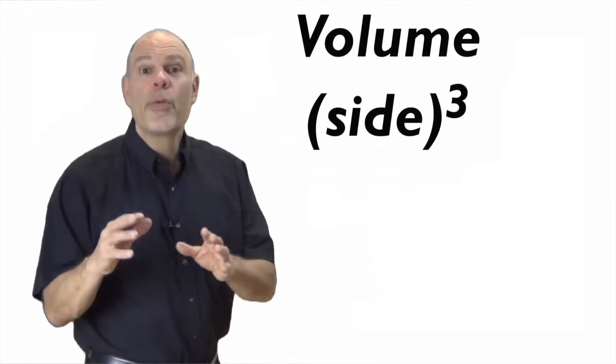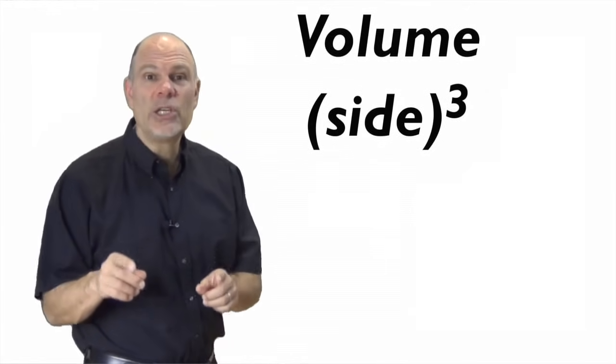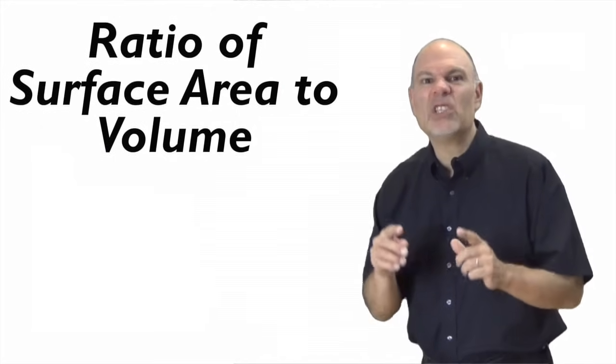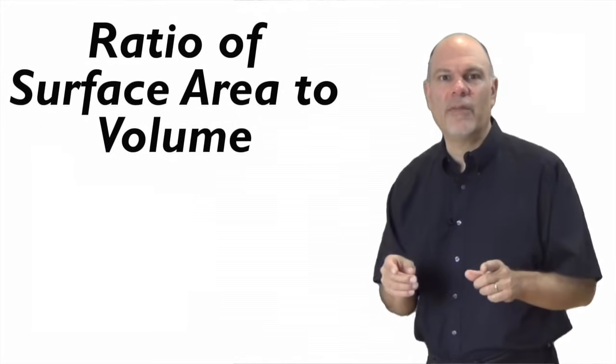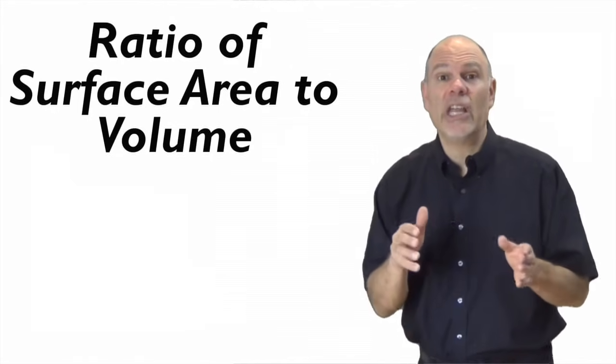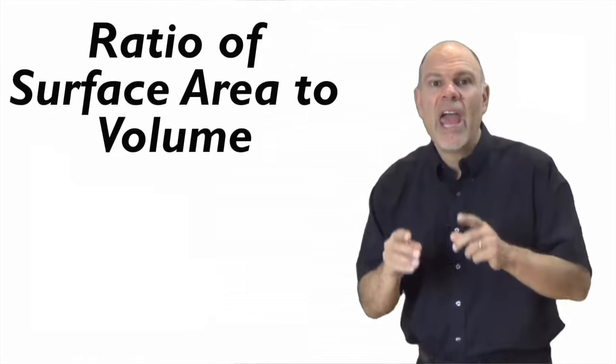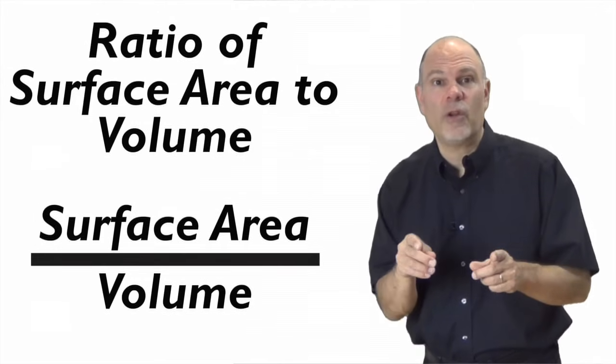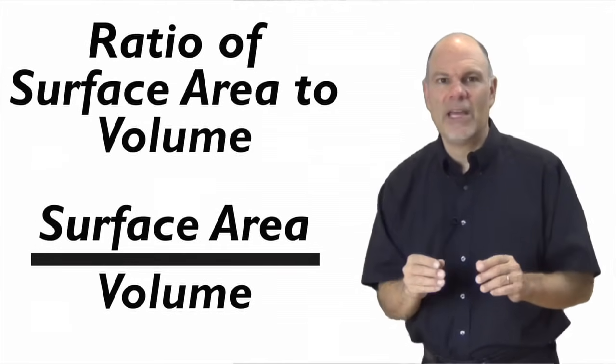The vinegar is diffusing through the outer surface and into the cube's volume. The smallest cube has the smallest volume at 0.001 centimeters cubed, while the largest cube has the largest volume, 1,000 centimeters cubed. What we're concerned with is the ratio of surface area to volume. A ratio is the relationship between two numbers, and the ratio we want is the ratio between the surface area for each cube divided by its volume.